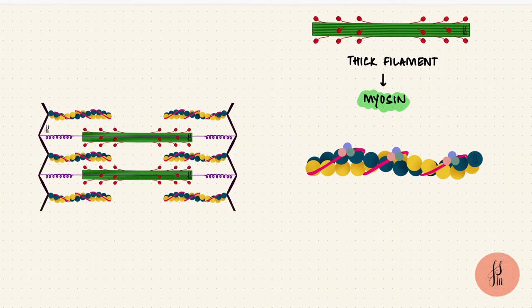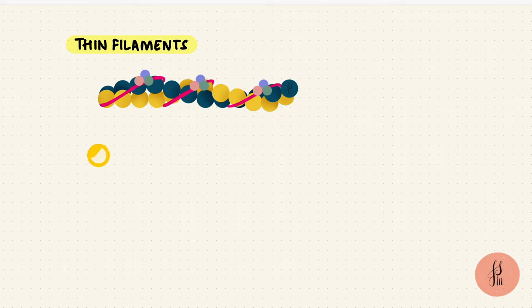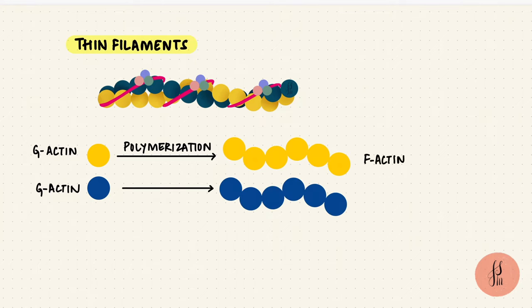So the thin filament has actin in addition to tropomyosin and troponins. The actin filaments are made up of globular actin units or G-actin which polymerize to form F-actin filaments. Two filaments wind around each other to form the thin filament.